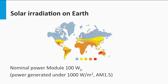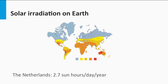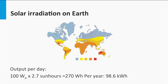The term 'peak' means the maximum power a solar module can deliver under standard test conditions. For a 100 watt peak module in the Netherlands, the annual average solar irradiance is 2.7 sun hours per day, yielding 100 × 2.7 = 270 watt hours per day, which equals 98.6 kilowatt hours per year. In sunnier places like Spain, common irradiance is around 4.2 sun hours per day, so the same 100 watt peak module will deliver on average 420 watt hours per day.